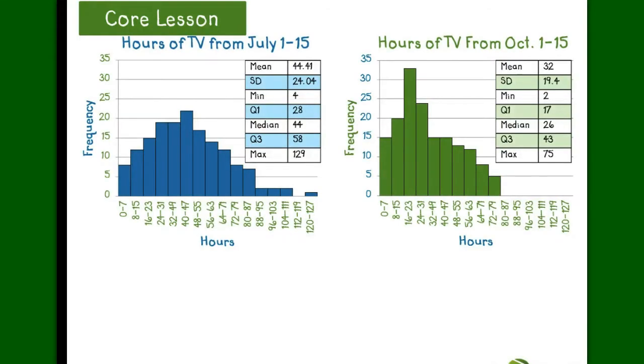Now, let's check for outliers. First, we need to find our interquartile range for July, which would be 58 minus 28, giving us 30.